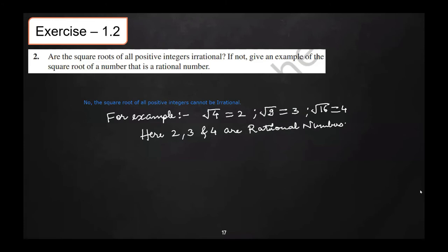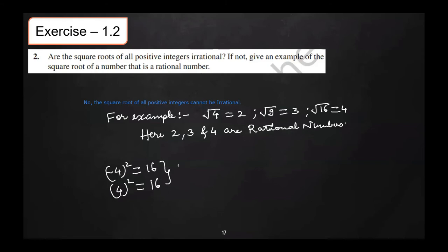A student asks: can a square root be negative, but is a square always positive? Yes — if you square minus 4, the answer is plus 16 because (−4) × (−4) = +16. Similarly, squaring +4 also gives 16. So the square of any number, negative or positive, is always positive.